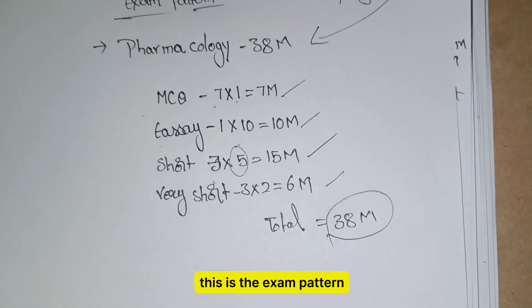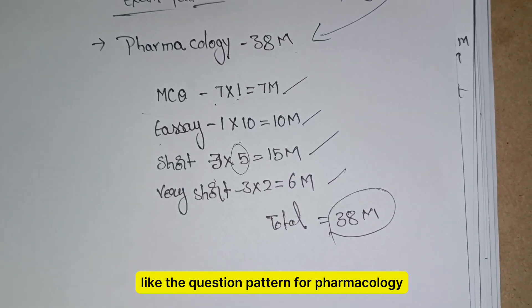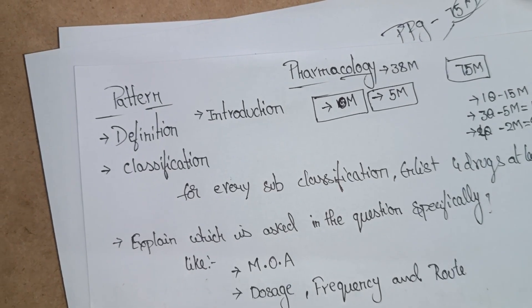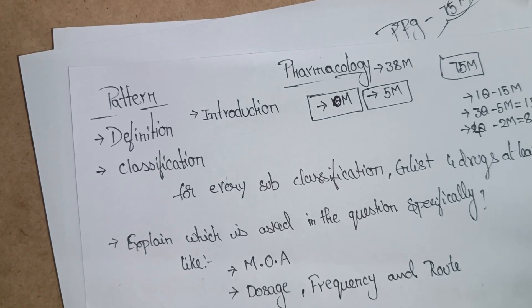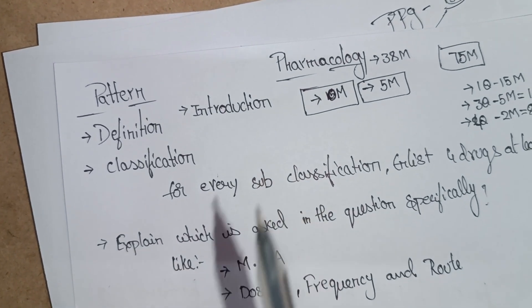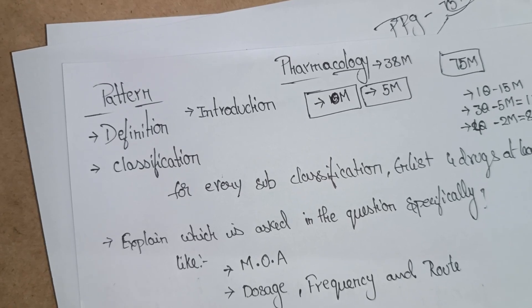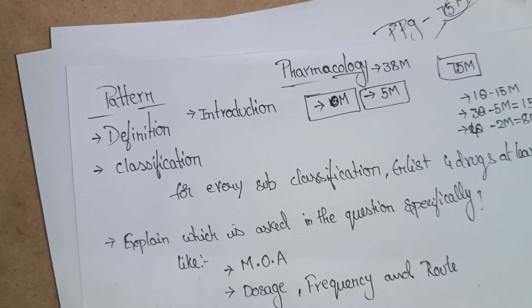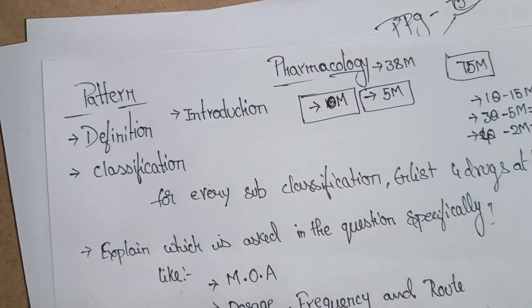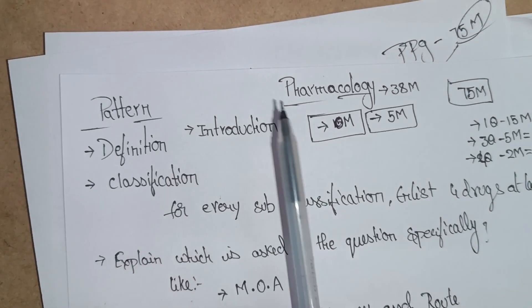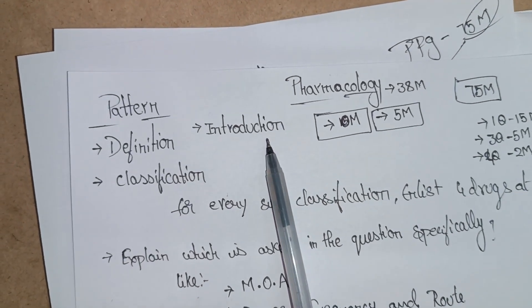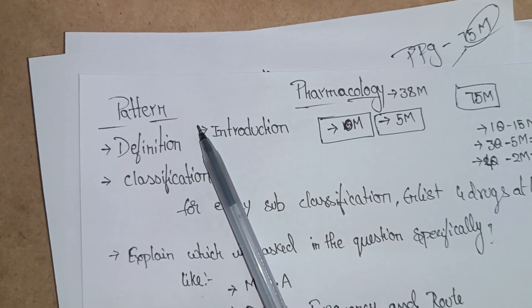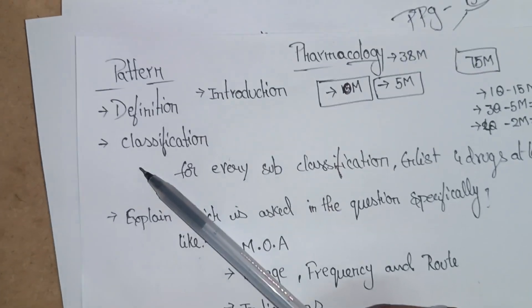This is the exam pattern — the question pattern for pharmacology. Now we'll discuss the pattern of the answer sheet, how we should write the answers. For 10 marks, and I will also explain for 5 marks and 2 marks how we need to write pharmacology answers. First, for 10 marks, we need to write introduction, definition, and classification of the drugs.